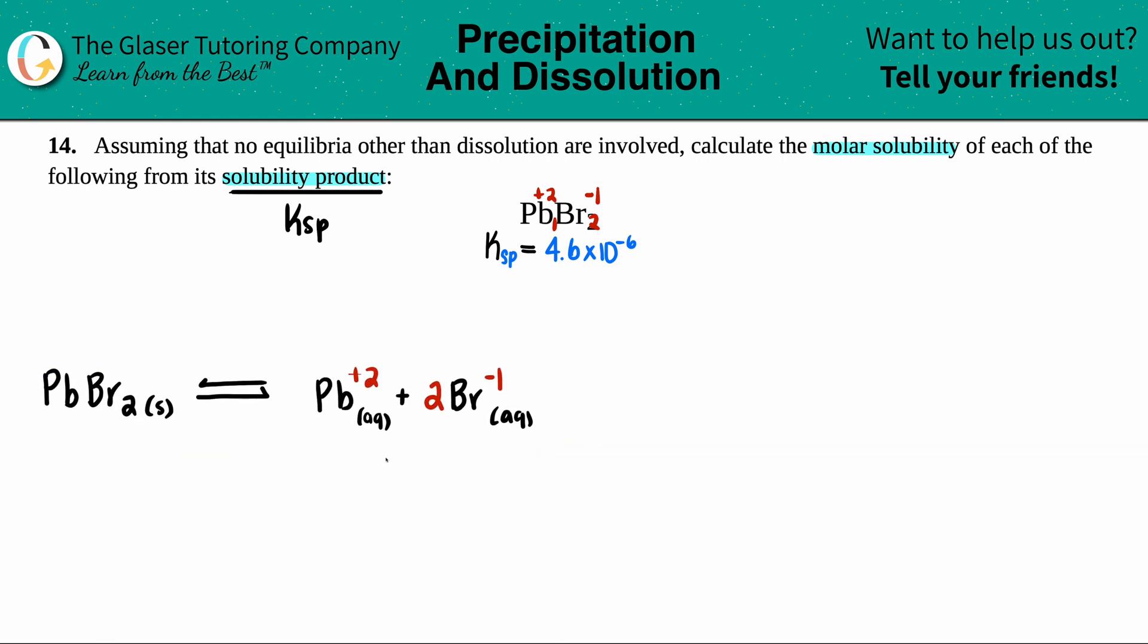So I'm just going to put it over here for now, but I'm going to use it to write out the general Ksp equation for this balanced equation. Remember the Ksp formula is this one right here.